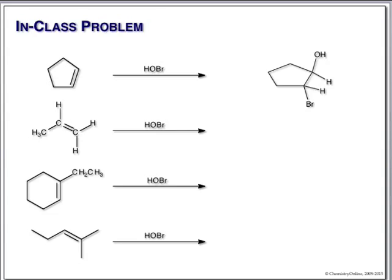In the next one, we do have a difference — this is a primary carbon, that's a secondary carbon. The regiochemistry must place the hydroxyl group bonded to the secondary carbon because that's where we have the most stable carbocation. Here we have to show both regiochemistry and stereochemistry on a six-membered ring. The tertiary carbon will give us the most stable carbocation, therefore the hydroxyl group goes there, bromine on the other, and they must be trans. I've done it here with wedge bonds; you could also use axial-equatorial groups.